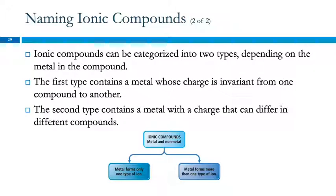All compounds whose first element is a metal are ionic. We can divide these into two types depending on the kind of metal. Some metals only form one kind of ion — these are the main group elements in Groups 1A, 2A, and 3A. Calcium is in Group 2A, so calcium ions are always 2+. Other metals — the transition metals — are 'squirrely': iron can be +2 or +3, and you can't tell from the periodic table. So we have metals that form only one kind of ion, and metals that form more than one.